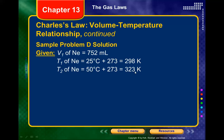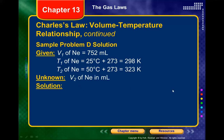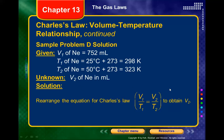We only work with Kelvin in these gas laws — all of them. You can't use Celsius. Even though one degree Kelvin equals one degree Celsius in size, for the proportions to work correctly, temperatures must be in Kelvin. We're trying to find the new volume V2.